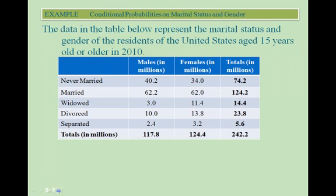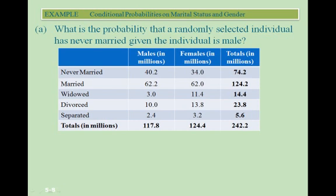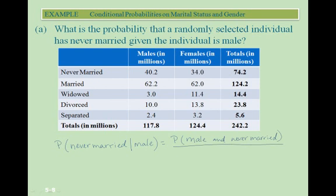In this example, we'll look at conditional probabilities on marital status and gender. The data in the table below represent the marital status and gender of residents of the United States aged 15 years old or older in 2010. For part A, we want to find the probability that a randomly selected individual has never married given the individual is male. Using our formula, we take the probability that they are male and never married divided by the probability that they are male.